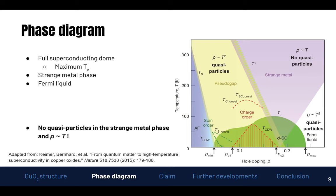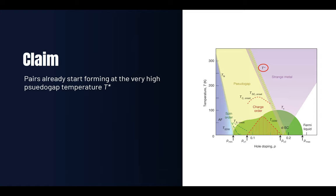At least we now have enough understanding of the phase diagram to look at the authors' main claim. Their claim is that pairs already start forming at the very high pseudo-gap temperature T*, and that this is what causes the pseudo-gap. Recalling BCS theory: in a normal metal, if we cool down below the critical temperature, we get a condensate of Cooper pairs, and it's these pairs that create the gap. What the authors argue is that perhaps we do not have full superconducting pairing, but we do have some level of pairing already far above superconducting order.